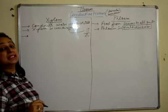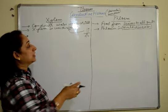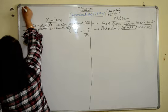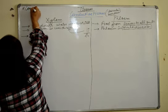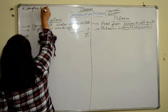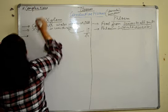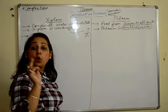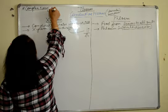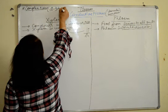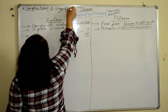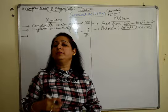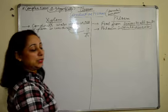Xylem, as we all know, is a complex tissue. What is a tissue? A tissue is a collection of the same type of cells which work together. But complex tissues are the ones which are made up of 2 to 3 types of cells. So xylem and phloem are made up of 2 to 3 types of cells.